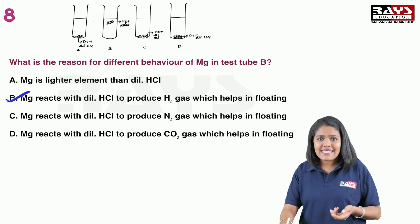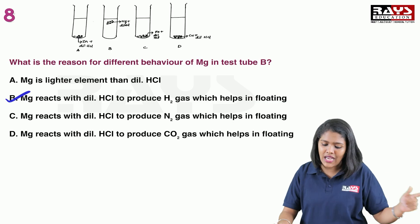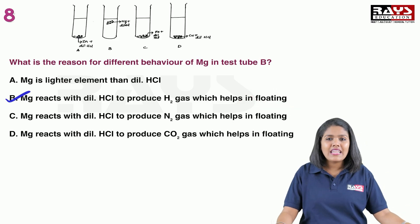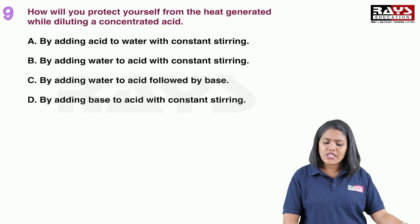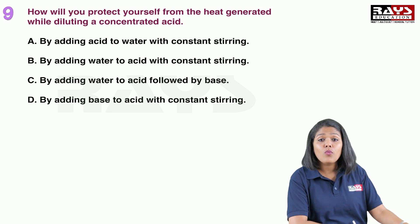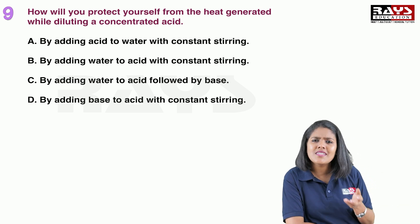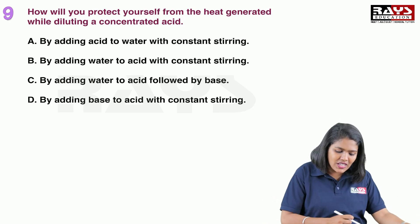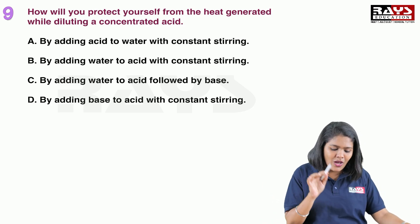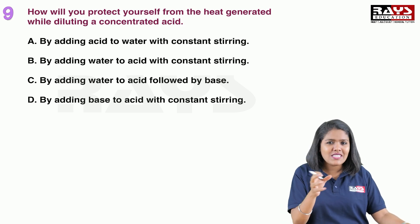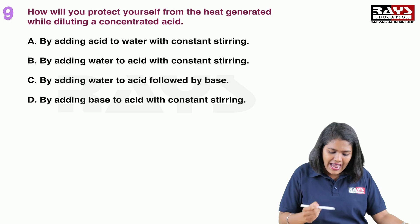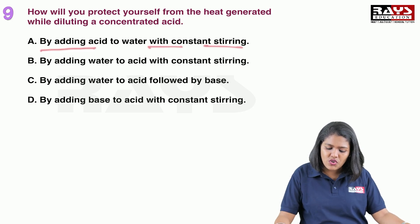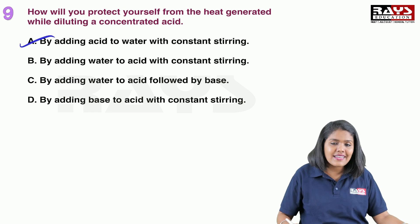When a metal reacts with dilute hydrochloric acid, hydrogen gas is produced, and this hydrogen gas causes floating. Now, how will you protect yourself from the heat generated while diluting a concentrated acid? The correct answer is: by adding acid to water with constant stirring.